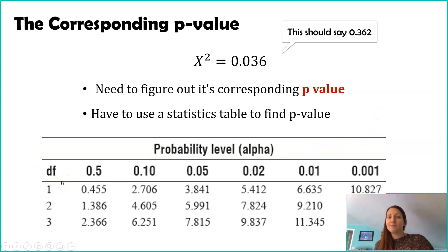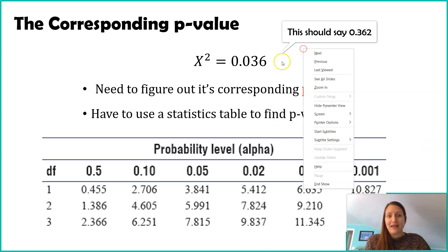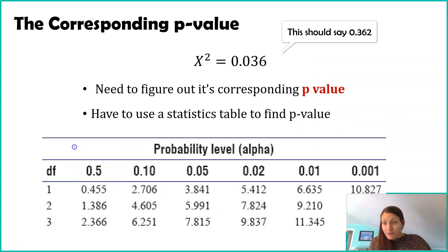So here's that statistics table again. Remember, df means degrees of freedom, which is number of variables minus 1. We have two variables, p and q, minus 1 means there's one degree of freedom. And again, no matter which number, this error or the 0.362 that we came up with, both of those numbers are found here. 0.3 and 0.03 are found on this side of 0.455. It's a really small number. Now we don't have the exact p-value, but what we do know is that p must be greater than 0.5. There is a larger than 50% chance that our null hypothesis is correct.